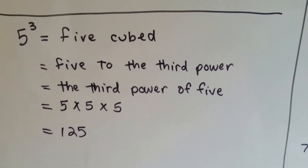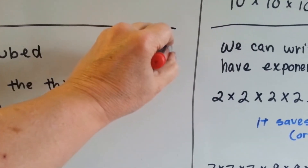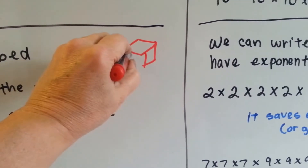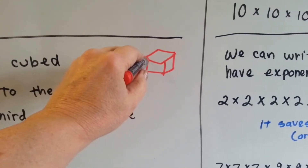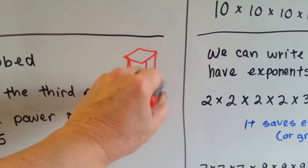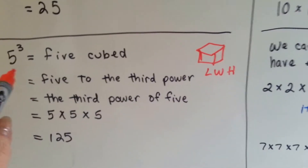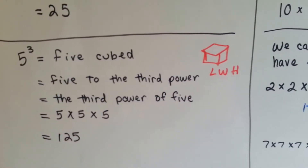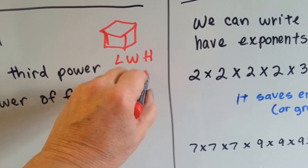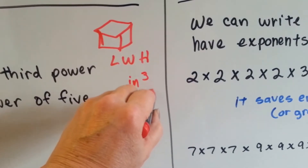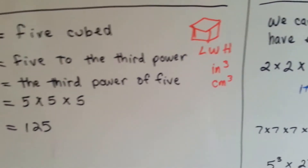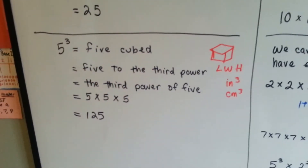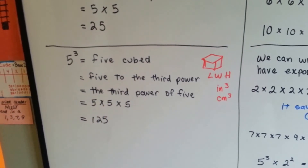Do you remember last year when we were doing cubes? We were doing cube units, and a unit cube had a length, a width, and a height, and we were multiplying length times width times height, and we were saying inches cubed or centimeters cubed. So that's cubed — it means there are three things that we're multiplying.